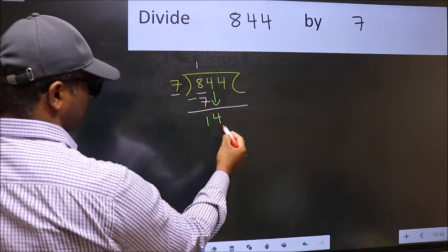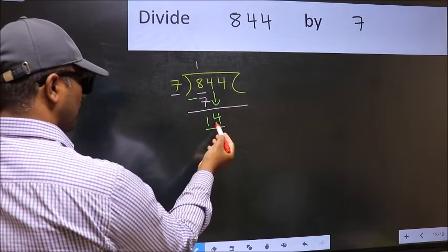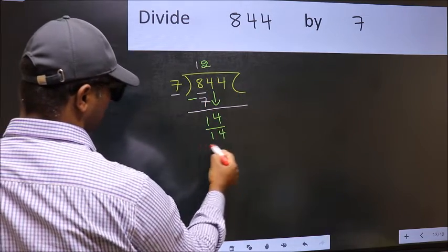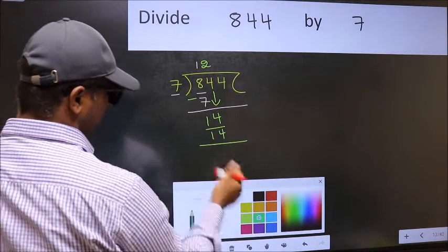So 4 down. Now 14. When do we get 14 in seven's table? Seven twos, 14. Now you should subtract.